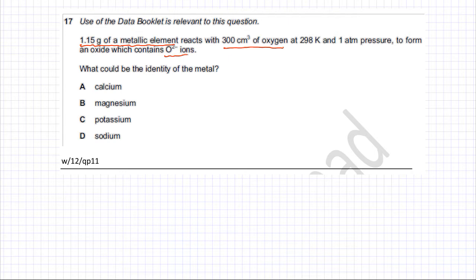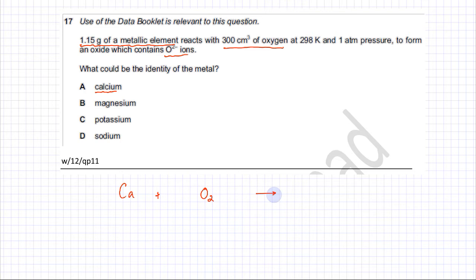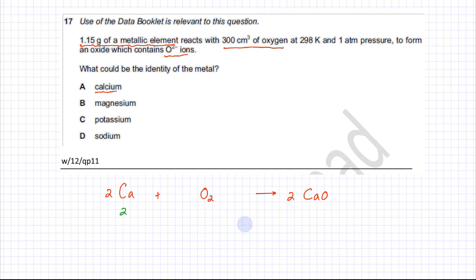Starting with option A, calcium. We write the equation: calcium reacts with O₂ to form calcium oxide, which contains O²⁻ ions. The balanced equation gives 2Ca + O₂ → 2CaO. The ratio in which calcium and oxygen react is two calciums to one oxygen molecule, so a 2:1 ratio.